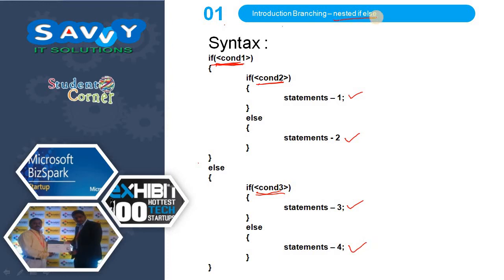Simply, nested if-else means if-else within if-else is used, then it is called nested if-else. It can be multiple levels, but here we are showing a simple scenario using one if-else inside another. This can also be represented in a flowchart.